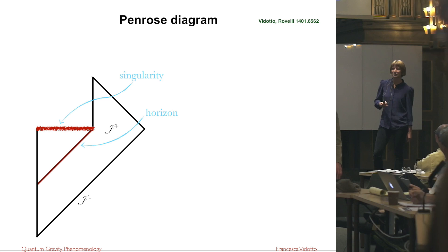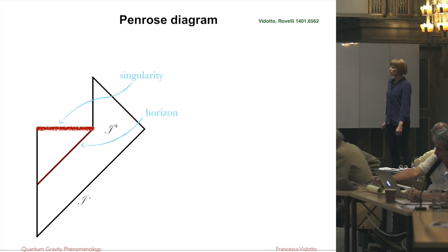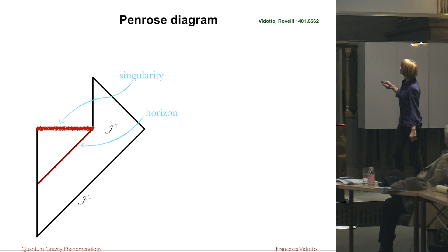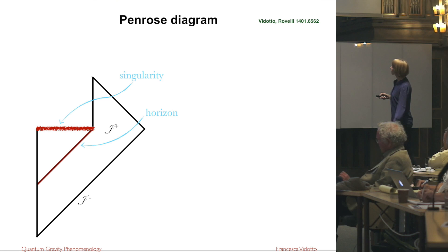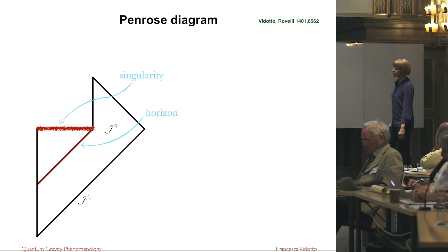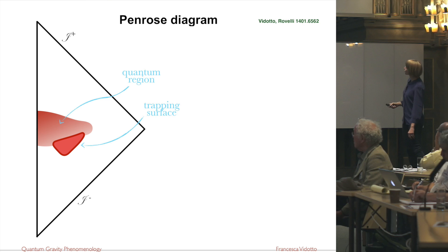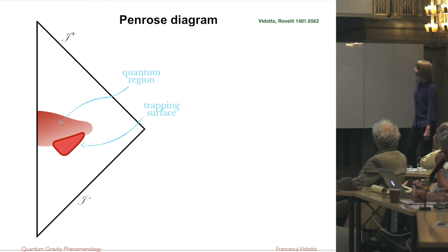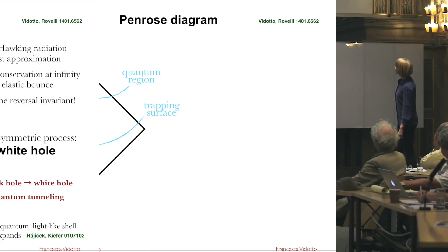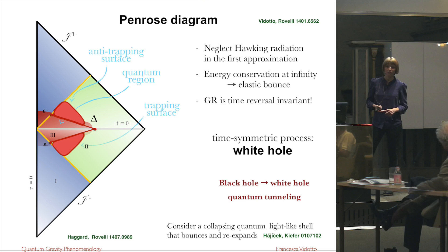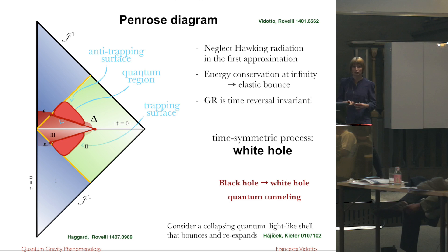You have heard about this model but let me rephrase it in one slide. We start from the usual picture in the Penrose diagram in which you can see a singularity and a horizon, and of course there is some Hawking evaporation there.